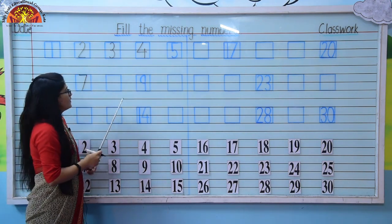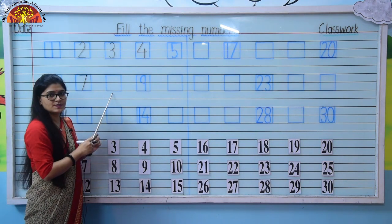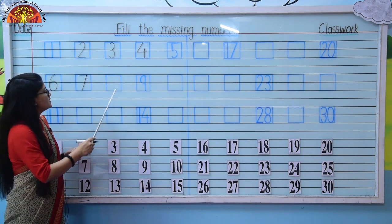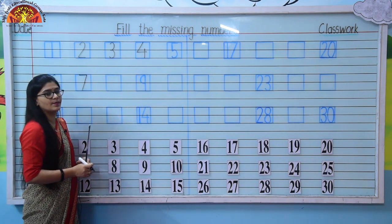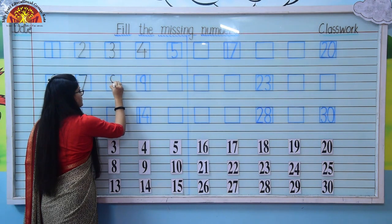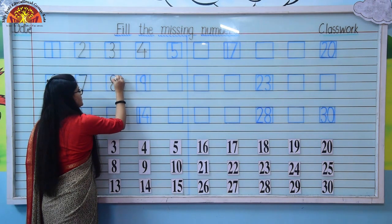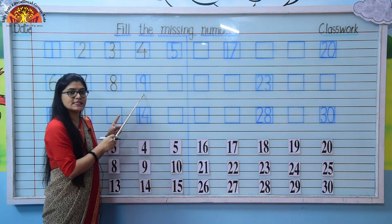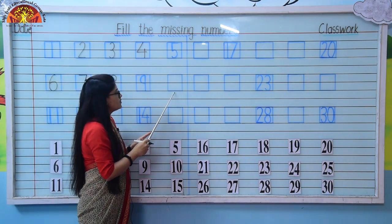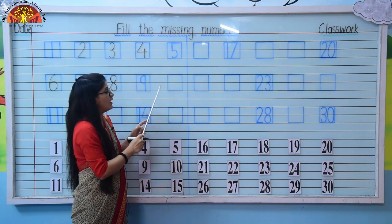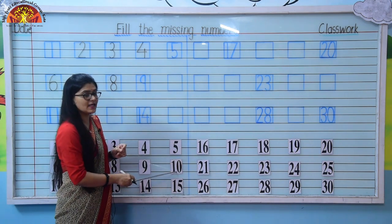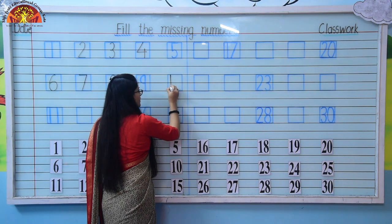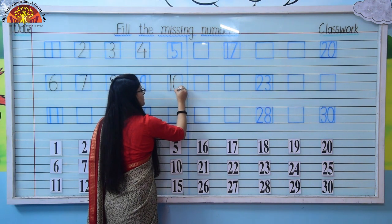Come to next one — this block is empty, the number is missing. So which number comes after 7? After 7 it's 8. So in this box we will write number 8. Write number 8. Next number is 9 — it's already written. Now, come to next block: which number comes after 9? After 9 it's 10. So here we will write number 10: 1, 0, 10.